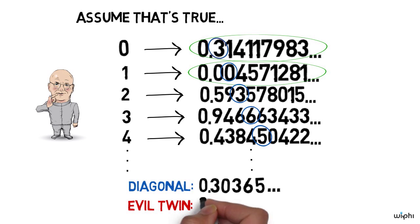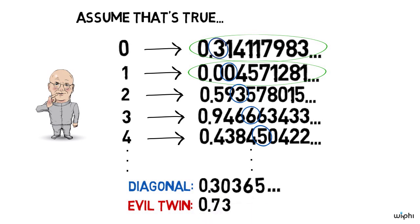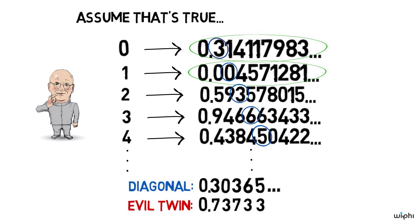So here's how it would go: here we have a 3, we write 7. Here we don't have a 3, we write 3. Here we have a 3, we write 7. Not a 3, we write 3. Not a 3, we write 3. And so forth.